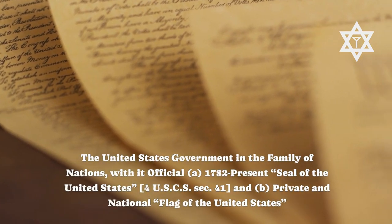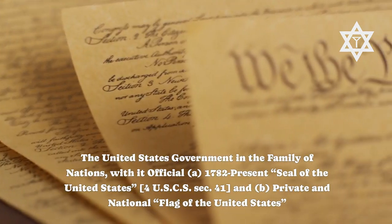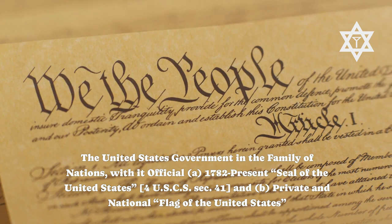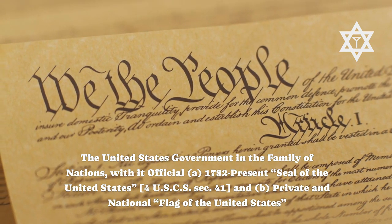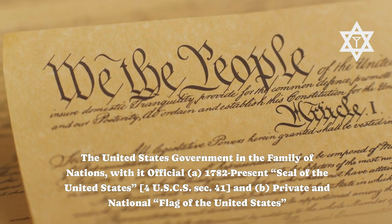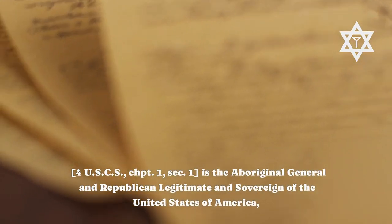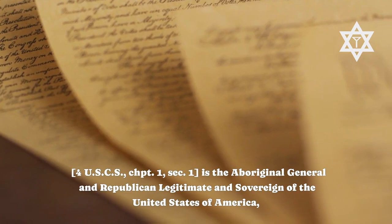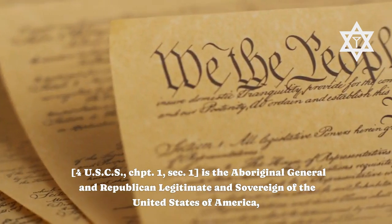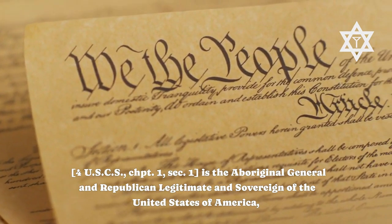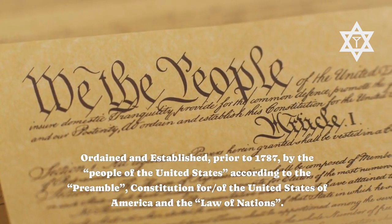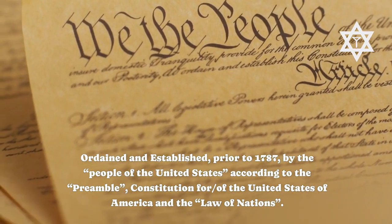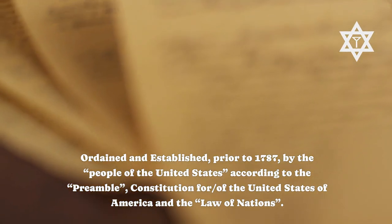The United States government and the family of nations with it: the official 1782 present seal of the United States, for USCS Sec. 41, and the private and national flag of the United States, for USCS Chpt. 1 Sec. 1 — is the aboriginal, general, and republican legitimate sovereign of the United States of America, ordained and established prior to 1787 by the people of the United States according to the preamble constitution of the United States of America.